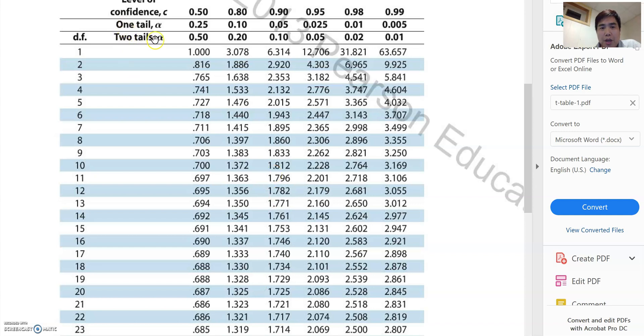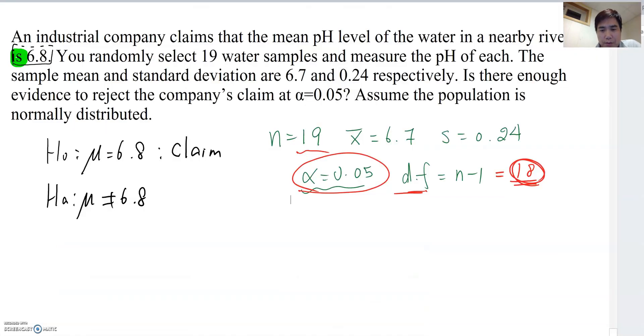Two tail alpha is here and 0.05 right here. And we go down until DF equal to 18, which is 2.101. So Tc becomes 2.101.